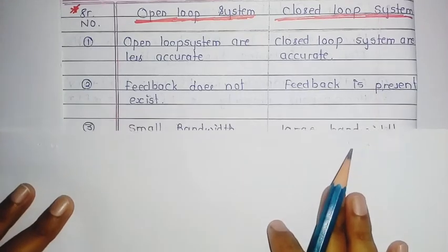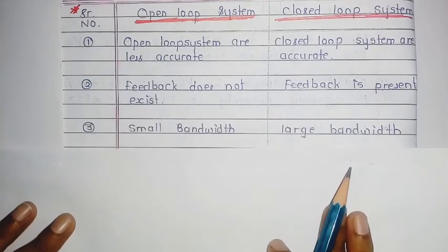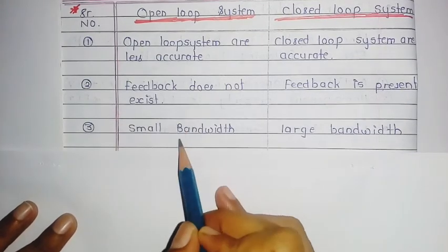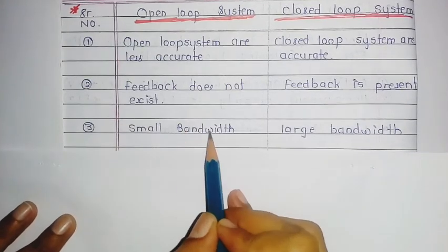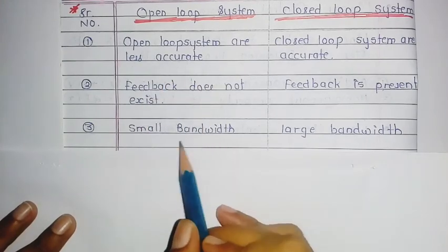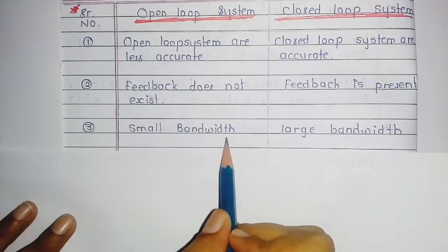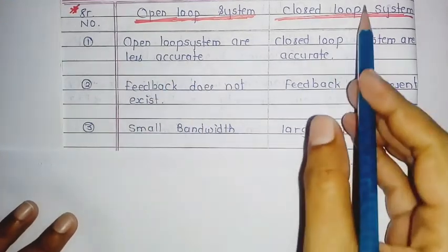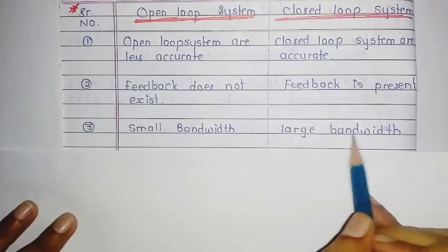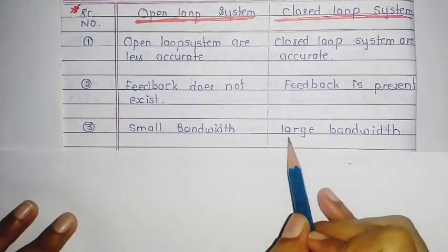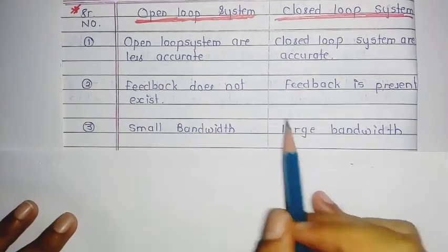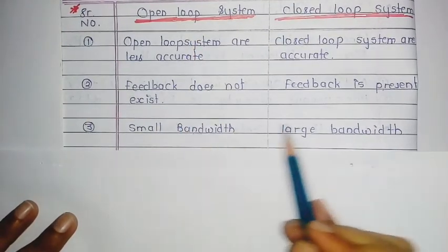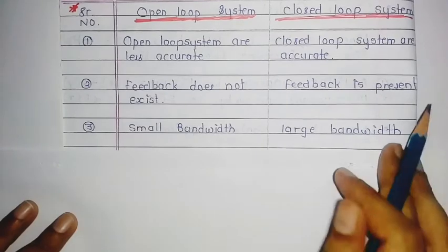The third point is bandwidth. In the open loop system, the bandwidth is small. In the closed loop system, the bandwidth is large.